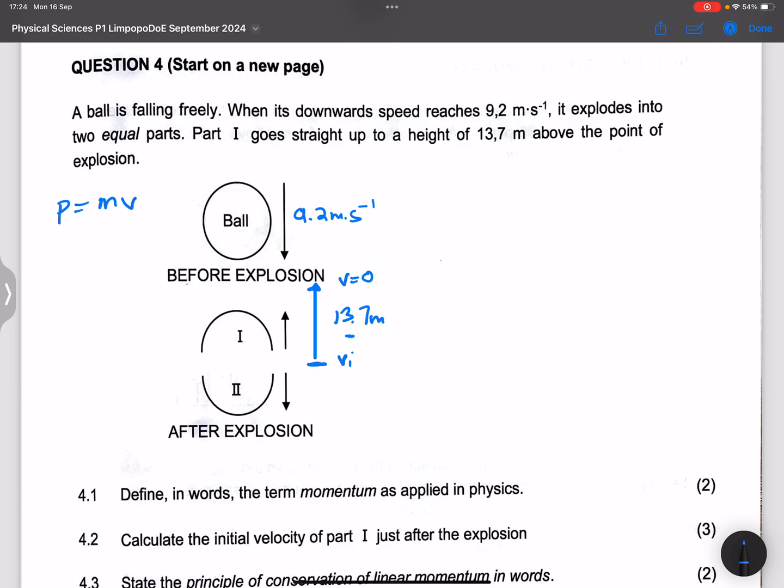So we're looking for the initial velocity. So that's vf² = vi² + 2g·Δy. So the final velocity is zero.